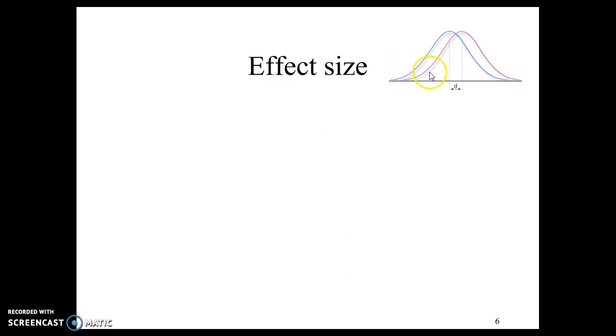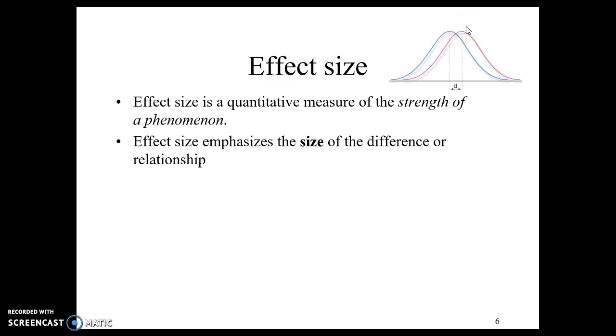Let's talk about what this idea of effect size is. This blue and purple distribution, they are different. We can see that the means are different. You'll notice that D, that's Cohen's D. Effect size is measuring the strength of a phenomenon, the strength of that difference. We're trying to measure the size of the difference. We're really doing here is measuring the size, how far apart are these two groups?